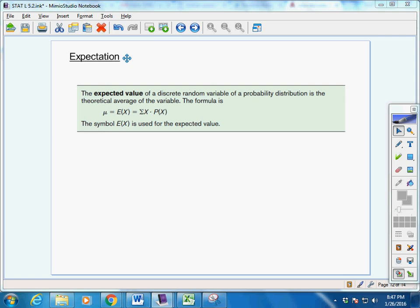The expected value of a random variable is the theoretical average of the variable. The way we're going to find that is basically the mean, but the theoretical mean, the theoretical average.